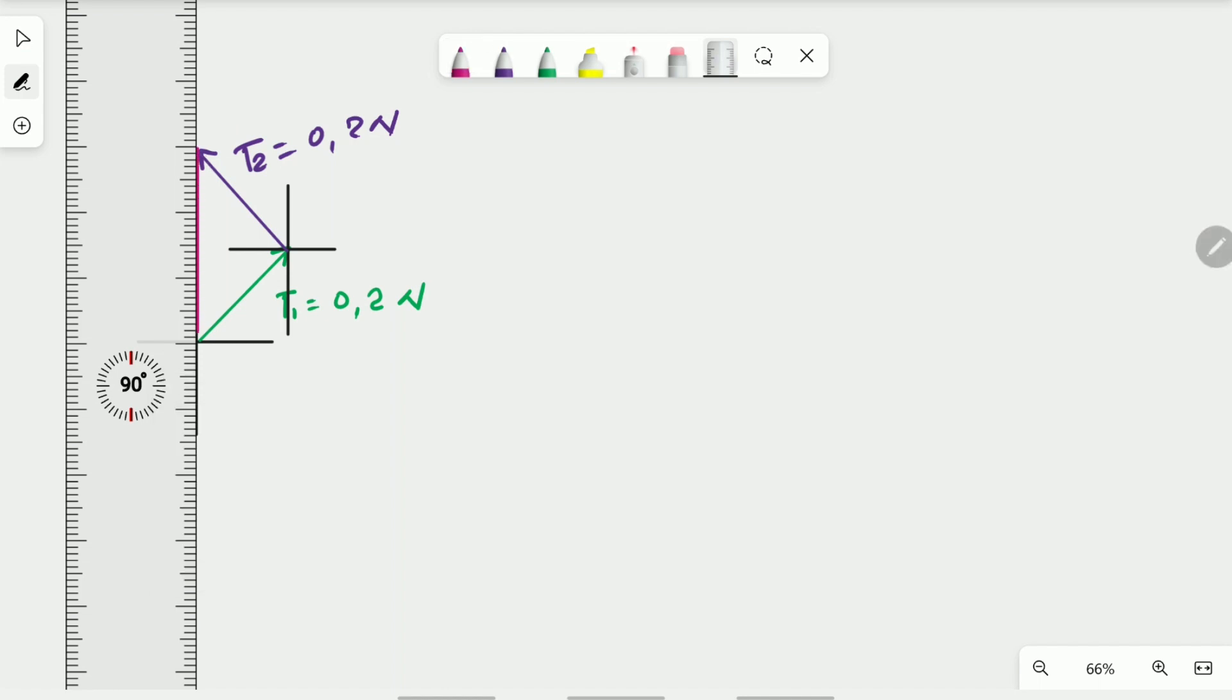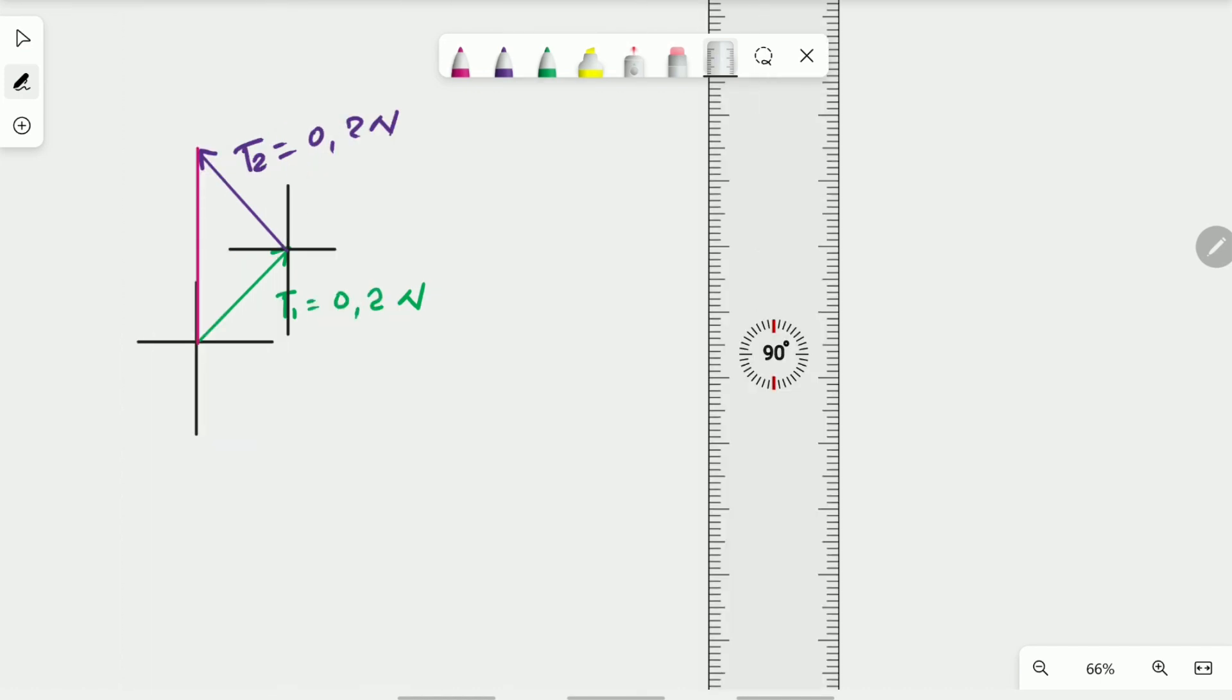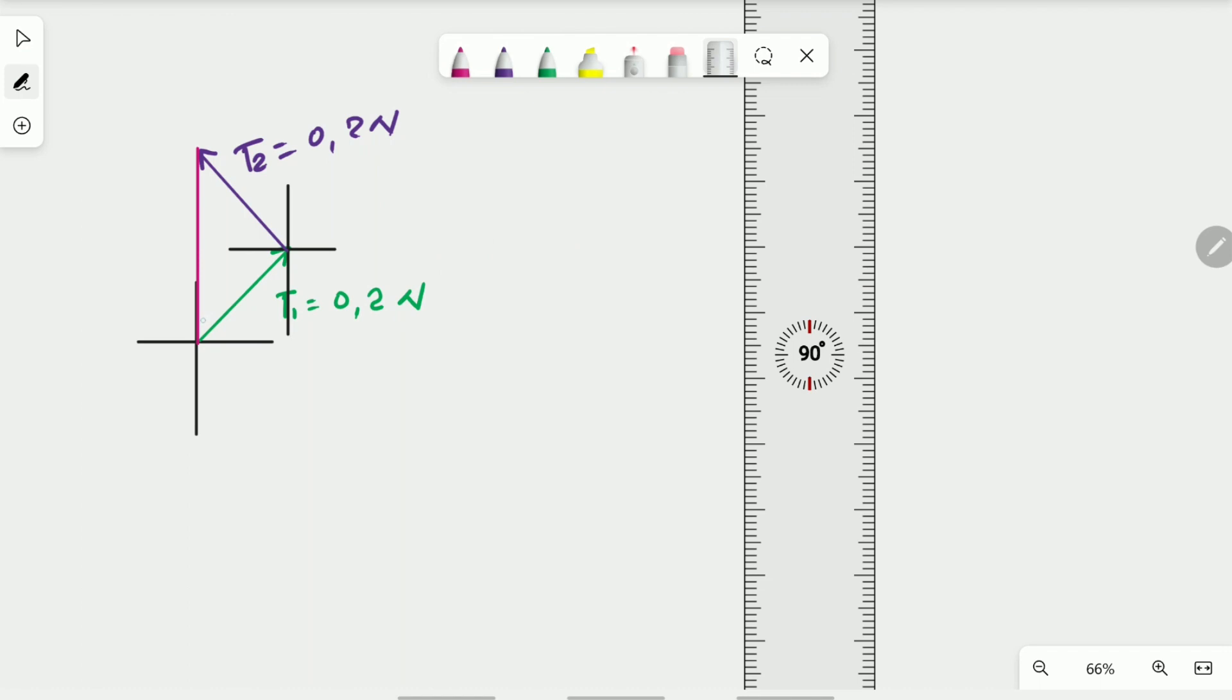So it was actually quite accurate guys. A little bit longer because of the accuracy of the ruler. This is the resultant, not the resultant, this is T3.